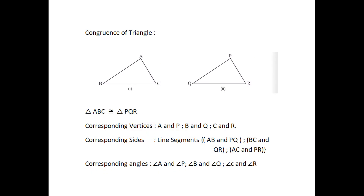Next, we will see about concurrence of triangles. Triangles are concurrent when all corresponding sides and the interior angles are concurrent. That is, two triangles are concurrent if they are copies of each other and when they are superposed, they cover each other exactly. Triangle ABC and triangle PQR have the same size and shape, so they are concurrent.